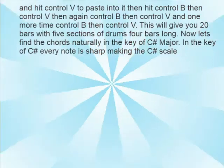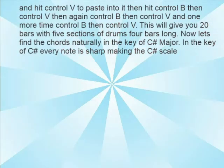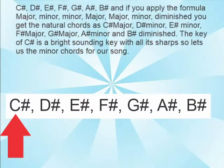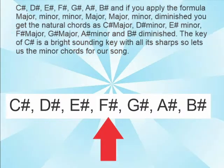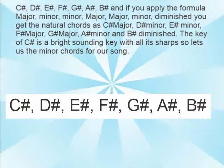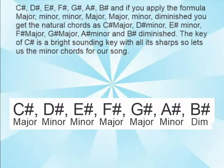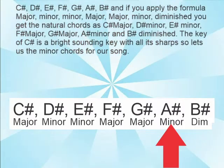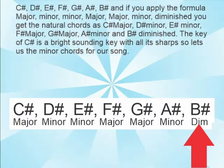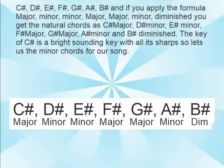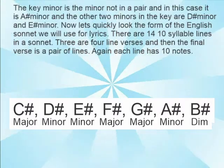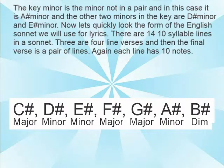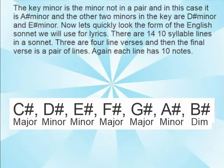Now let's find chords naturally in the key of C sharp major. In C sharp, every note is a sharp, making the scale: C#, D#, E#, F#, G#, A#, B#. Applying the formula major, minor, minor, major, major, minor, diminished, you get the natural chords: C# major, D# minor, E# minor, F# major, G# major, A# minor, and B# diminished. The key of C sharp is a bright-sounding key with all its sharps, so let's use the minor chords for our song. The key minor is A# minor — the minor not in a pair — and the other two minors are D# minor and E# minor.